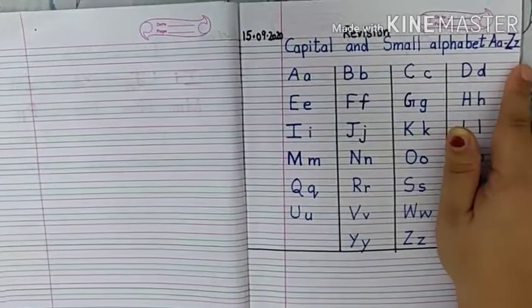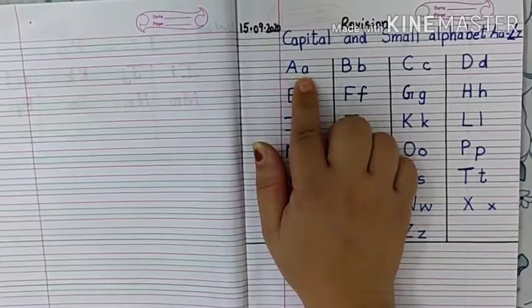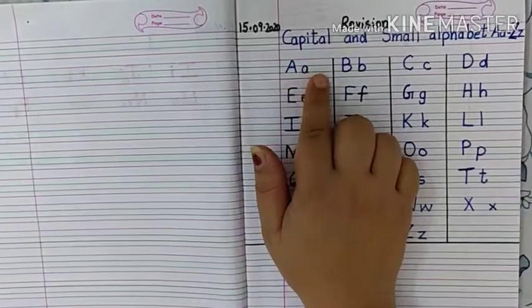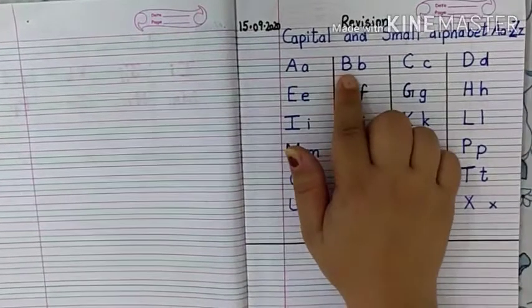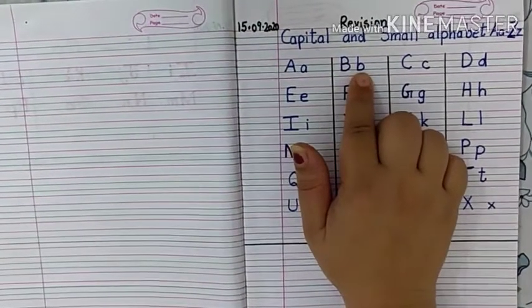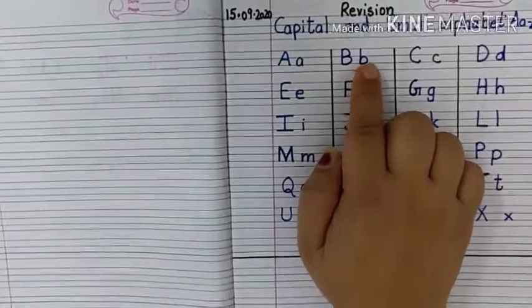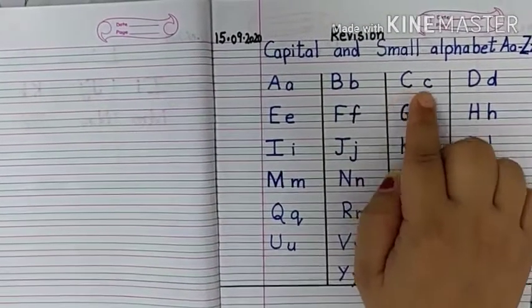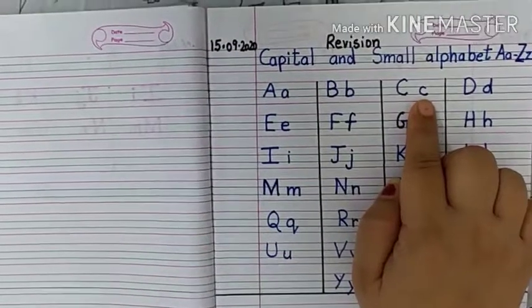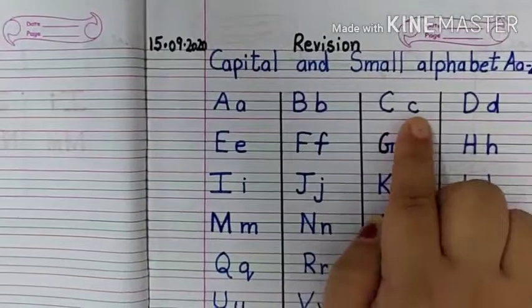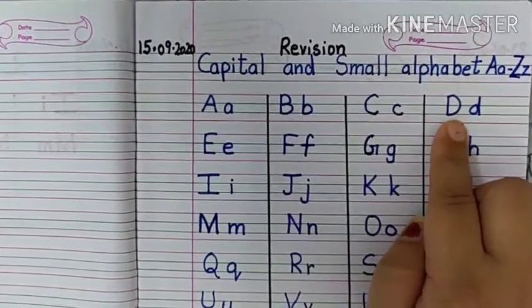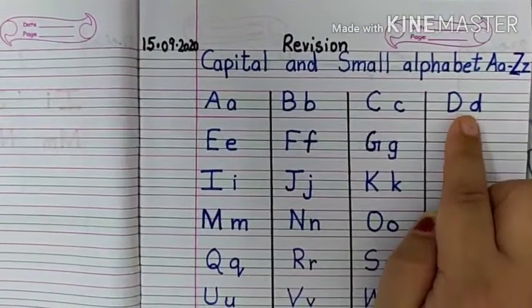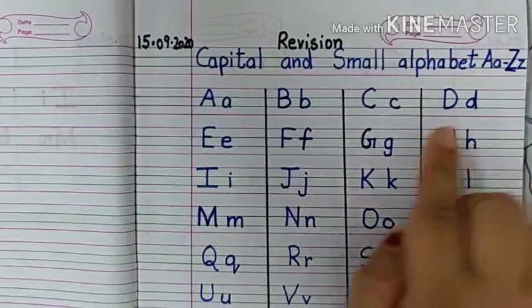Let's start. Capital A, small a, A says A. Then next, capital B, small b, B says B. Next letter, capital C, small c, C says K. Next, capital D, small d, D says D.